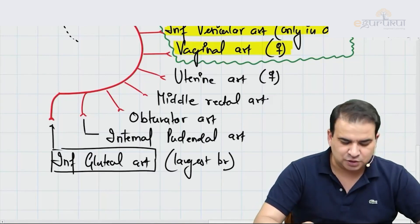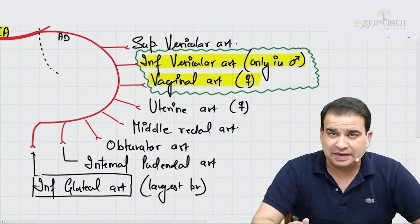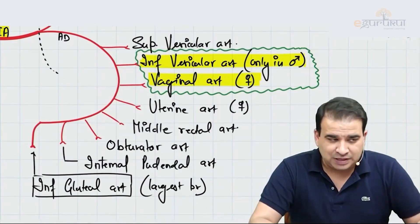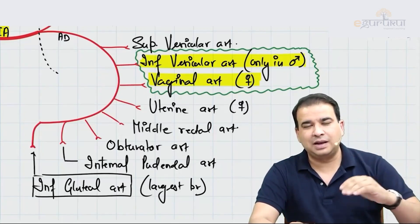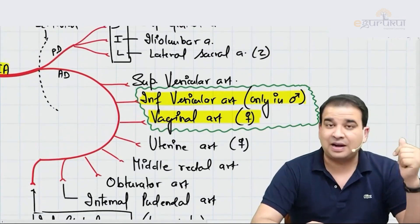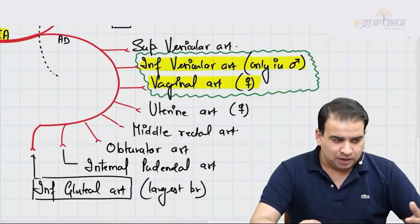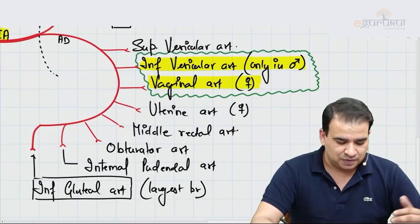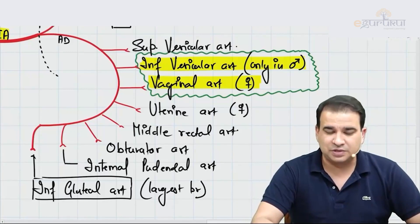The inferior gluteal artery is also a branch of the anterior division, and notably it is the largest branch of the internal iliac artery. The anterior division mainly supplies visceral structures — vesicular arteries, uterine, rectal, vaginal — while the posterior division (superior gluteal, iliolumbar, lateral sacral) primarily supplies the pelvic wall and gluteal region.